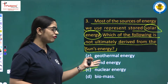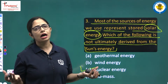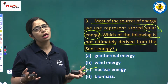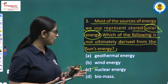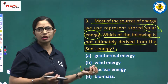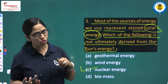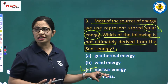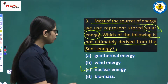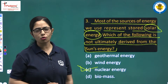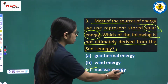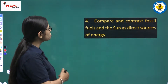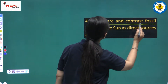Wind energy is driven by the sun's uneven heating causing wind movement, and biomass plants also use solar energy. But nuclear energy does not involve solar radiation, so Option C, nuclear energy, is the correct answer.